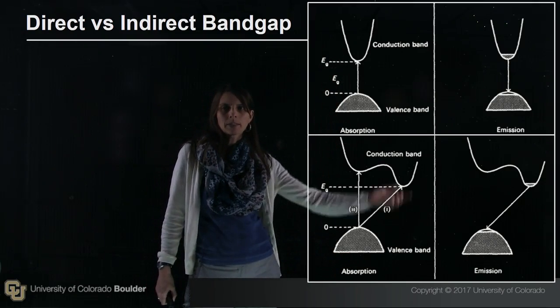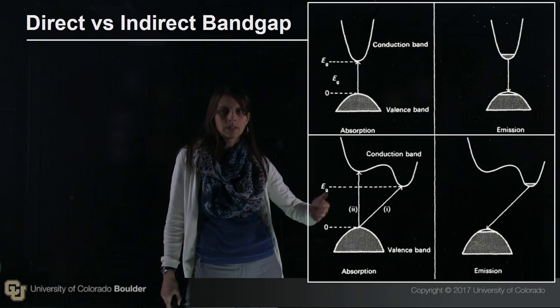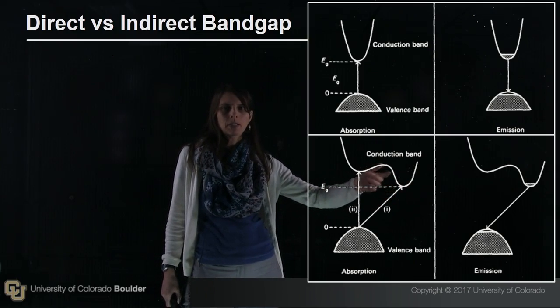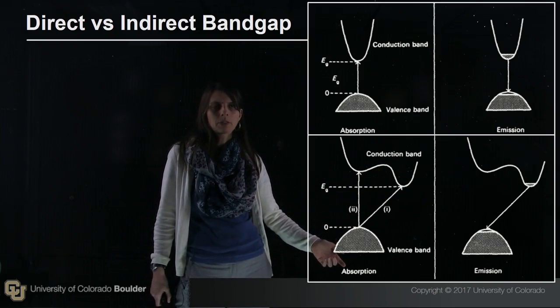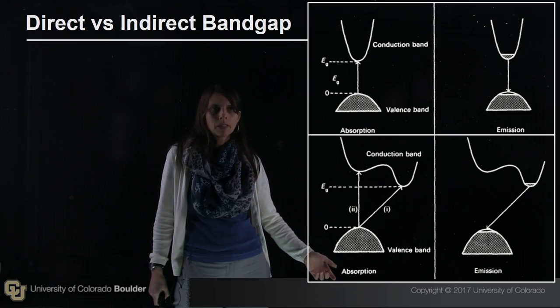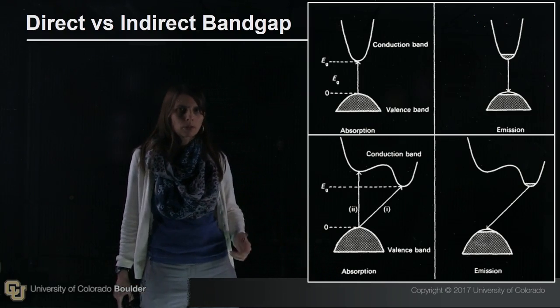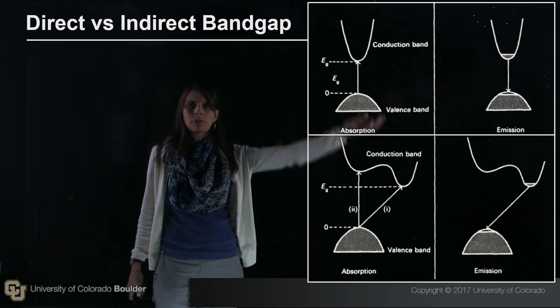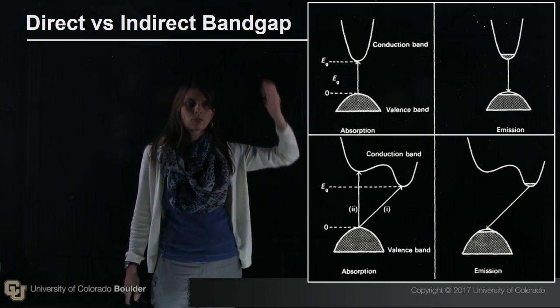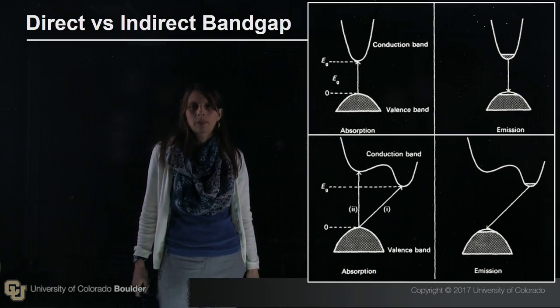At the bottom, you see an example of an indirect bandgap material such as silicon. In K-space, the minimum of the conduction band does not align with the maximum of the valence band, which makes it very hard to get light emission. Now, in addition to the electron and the hole, you also need a phonon, so your light emission has gone from a first-order process in the case of direct bandgap to a second-order process in the case of indirect bandgap.